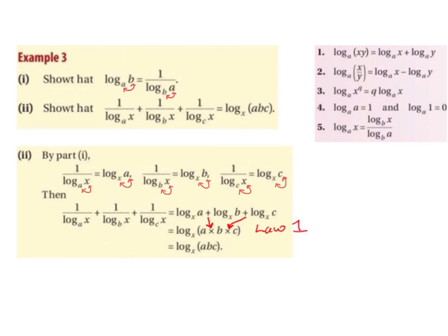So 1 over log base a of x — we flip the x and the a and get rid of the 1 over to give us log base x of a. Then 1 over log base b of x — we get rid of the 1 over and flip the x and the b to get log base x of b. And 1 divided by log base c of x — we swap the c and the x to get log base x of c. We put pluses in between them because we had this plus this plus this, so we have rewritten each of those fractions with a plus sign in between.